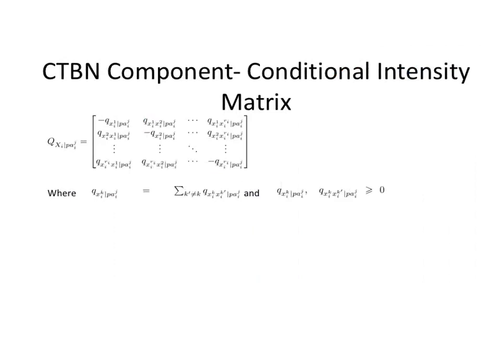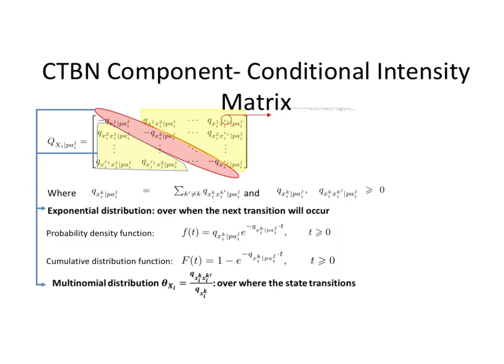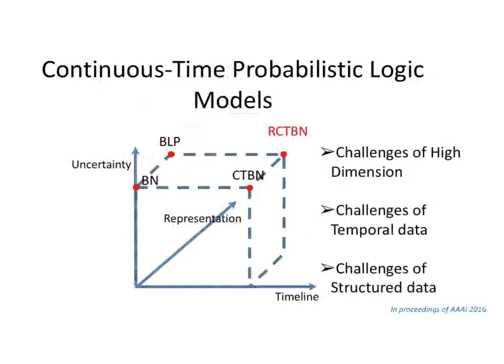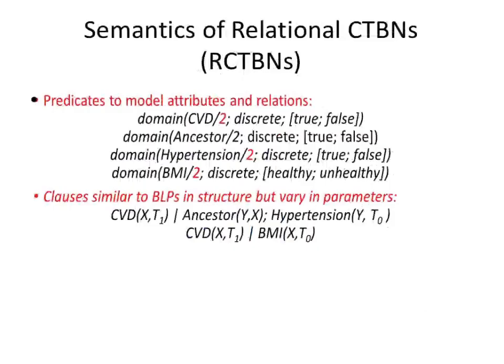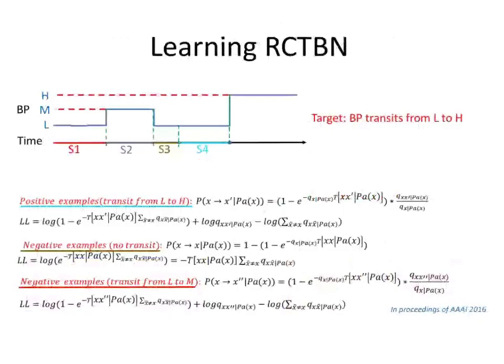A beautiful distribution that captures this is the exponential distribution — as time increases, chances increase. These models are essentially forms of exponential distributions that are memoryless, but you can add memory using conditional intensity matrices. What we have done is taken a continuous-time Bayesian network and relationalized it. This is a 2016 paper where we apply this to electronic health records. You can define logic-based models and add conditional intensity matrices on top, and these can be boosted as well.